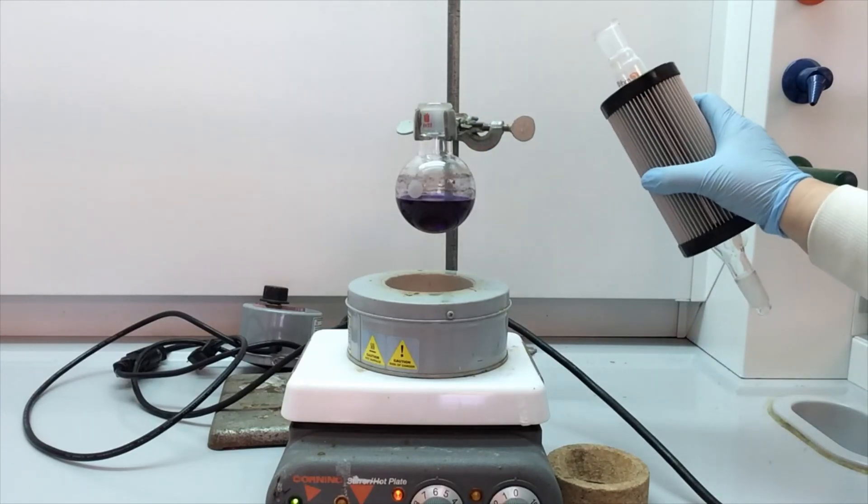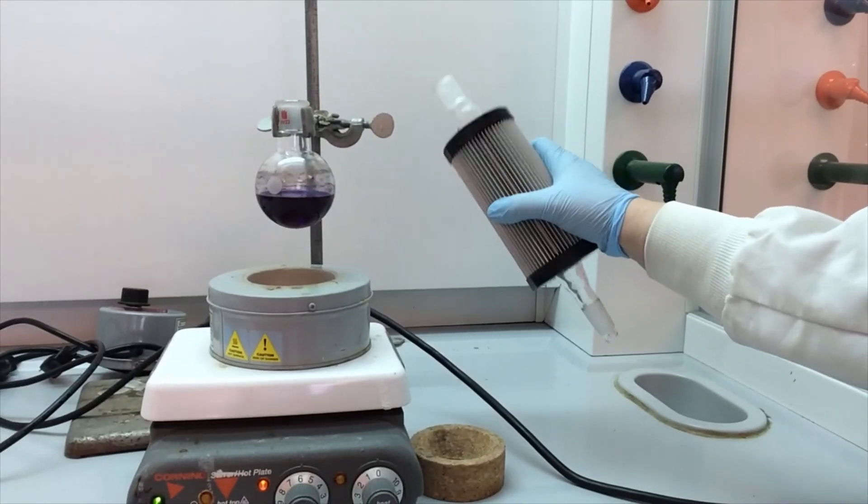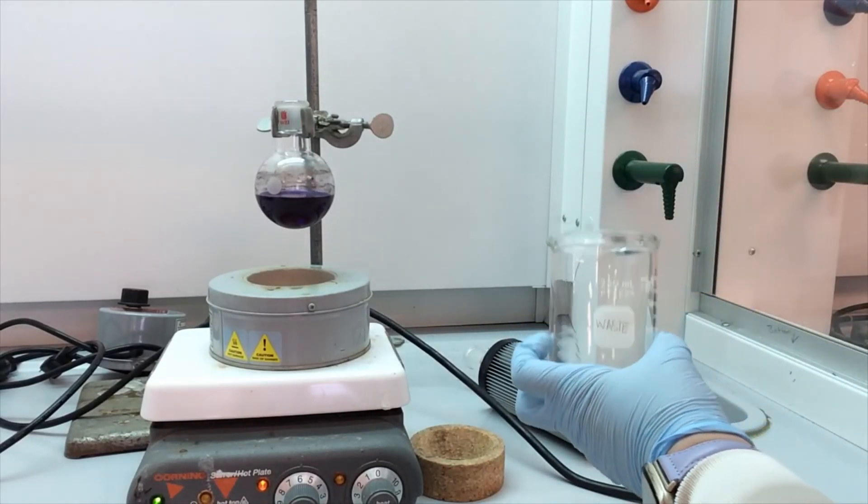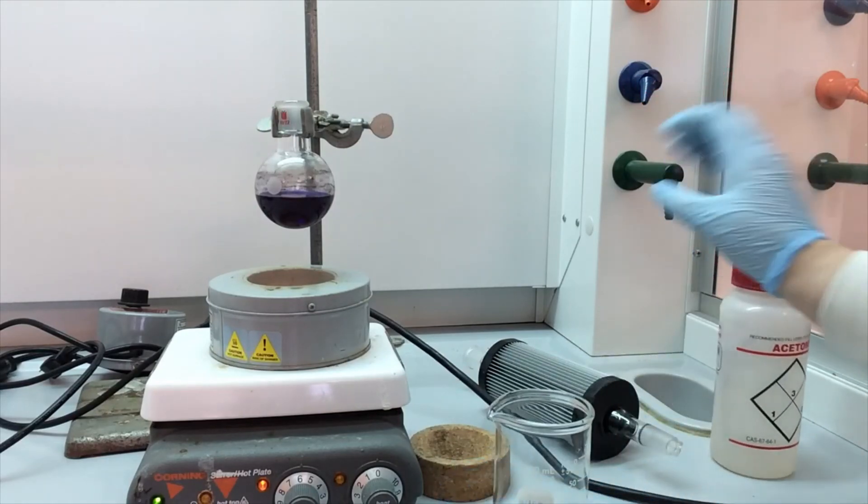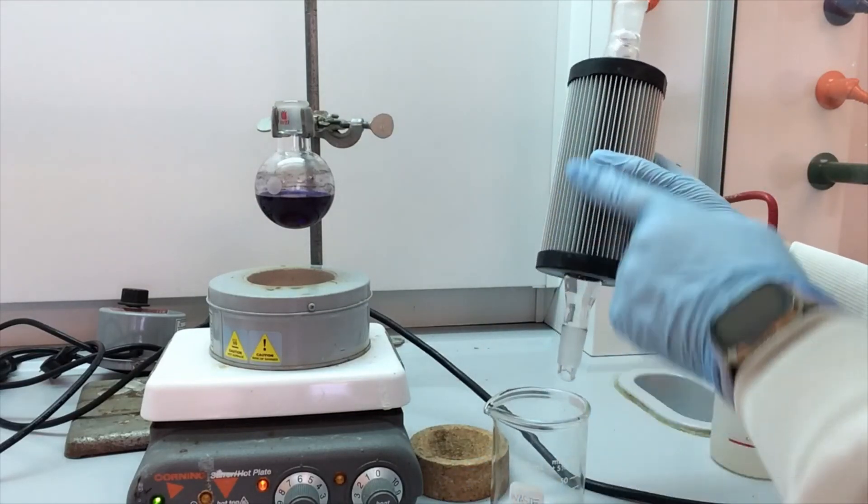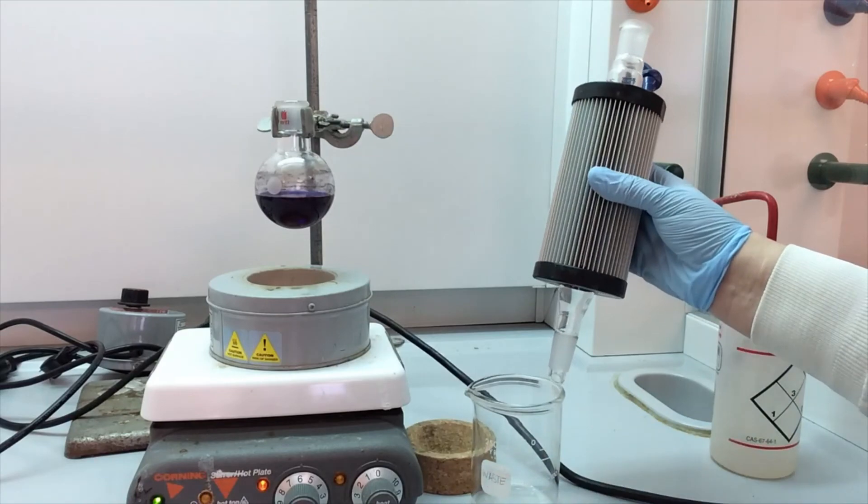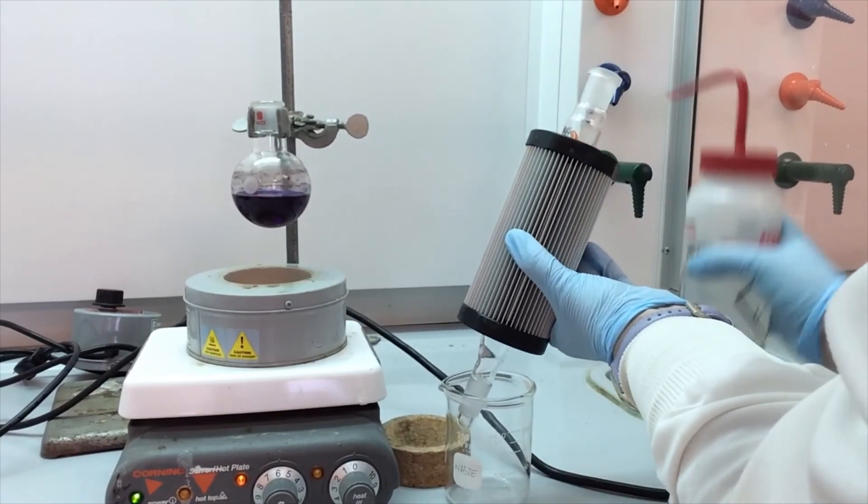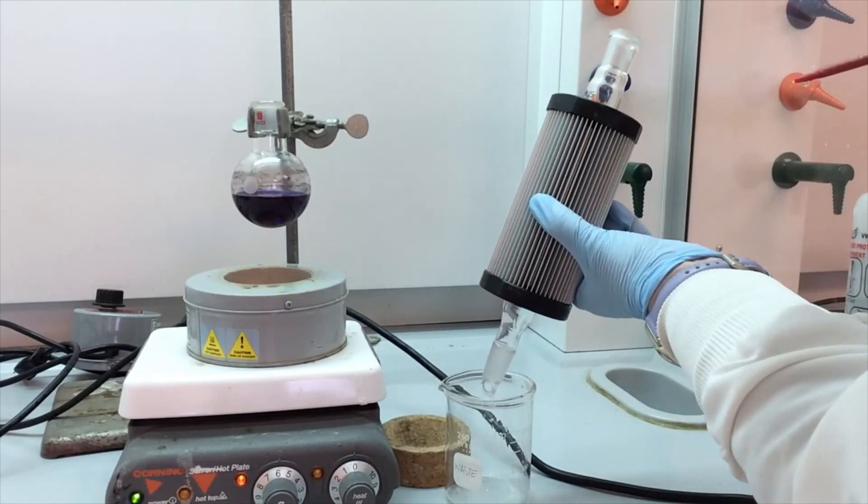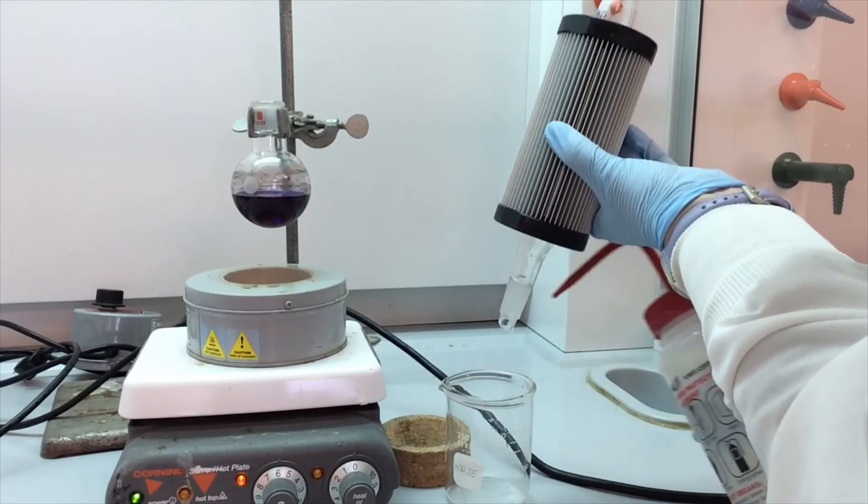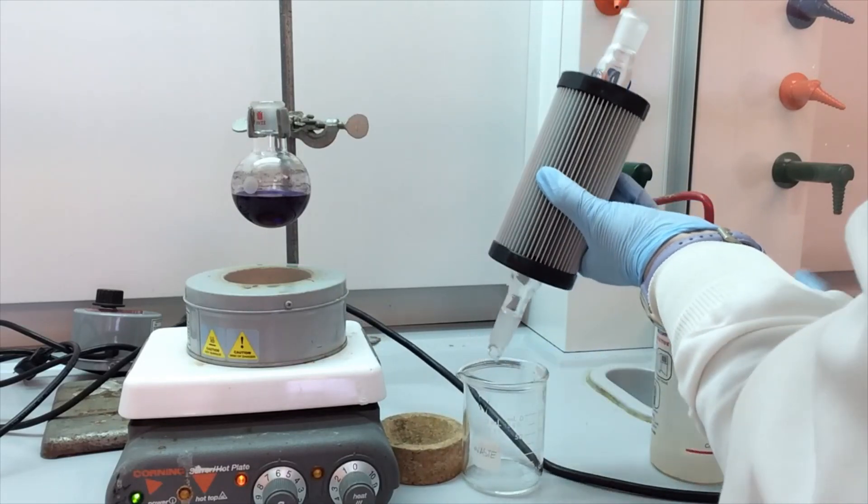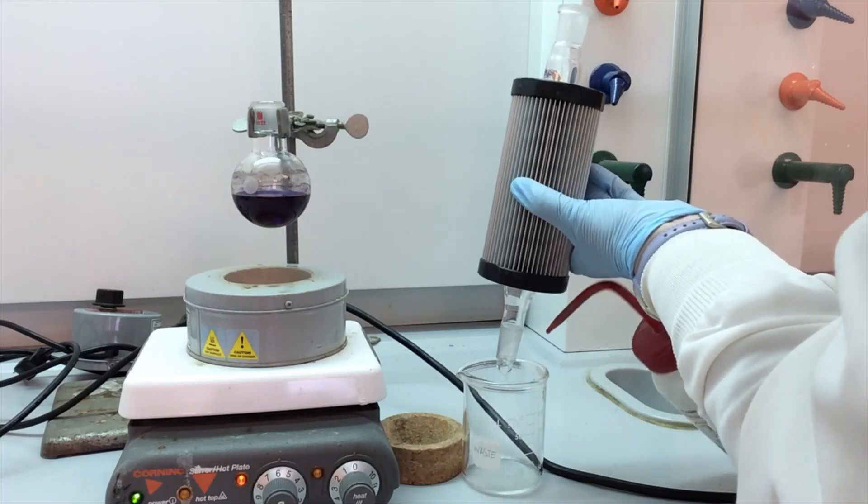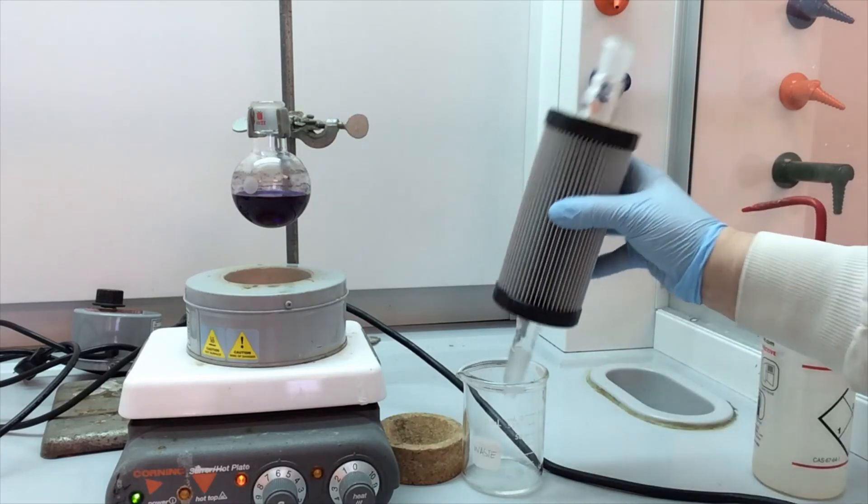So I have a waste beaker, and I also have my acetone squeeze bottle. And so there was only solvent in this, so it's not particularly dirty. So the only thing that I'm going to do to clean this is squirt some acetone inside, let it drip into my beaker. And then I'm going to squirt the ground glass joint and make sure that's clean as well. And that's it.